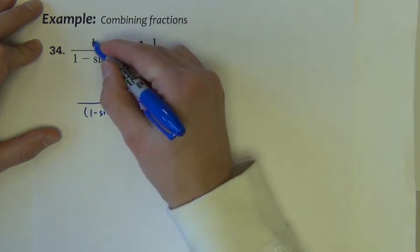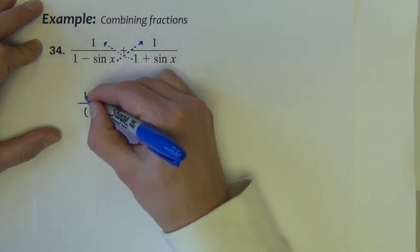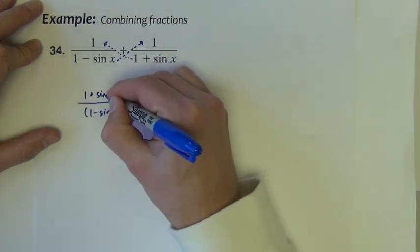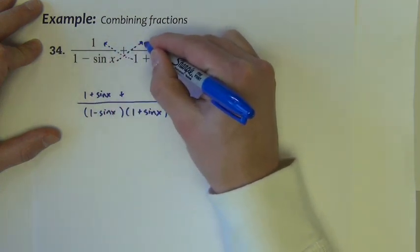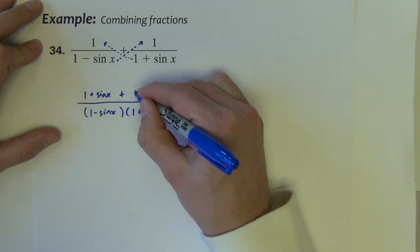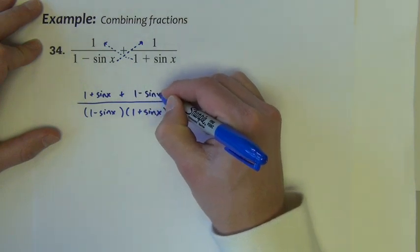So we have 1 times 1 plus sine, which is just 1 plus sine x, plus between the fractions, this denominator times this numerator will give us just 1 minus sine x.